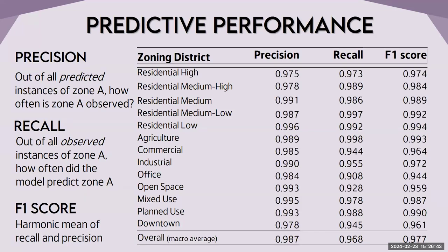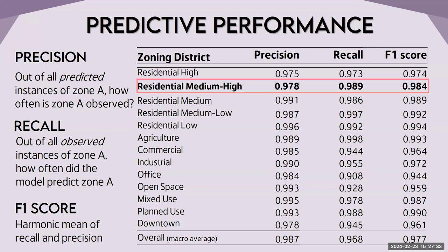Breaking down performance per class: office zoning was our poorest performing class with an F1 of still 0.94 — really strong performance even for our lowest performing class. However, office had a lower recall than precision: recall is at 0.90, meaning out of observed instances of office, the model predicts office about 90% of the time. When we look at precision, out of predicted instances of office, 98% of the time we are correctly predicting it. This means we may be under-predicting the office class, missing some observed instances. Alternatively, residential medium-high shows a slightly lower precision than recall, suggesting we may be over-predicting that class.